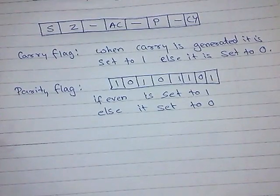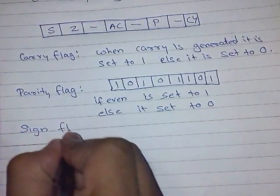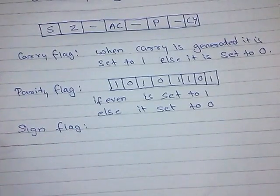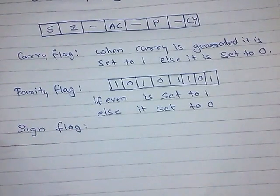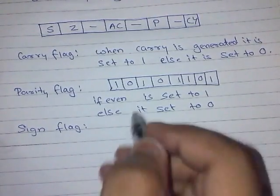Next flag is sign flag. This is simple. Sign flag is used to show that if the number present in accumulator is a negative number or a positive number. Suppose the result of your operation is minus 3. 3 is a negative number. To denote this negative number, we need to show the sign. So this sign flag does that.